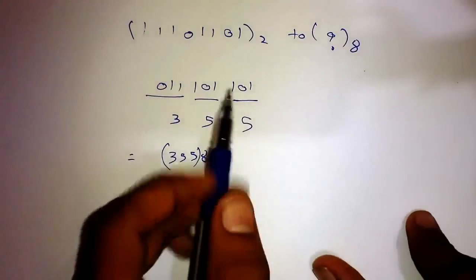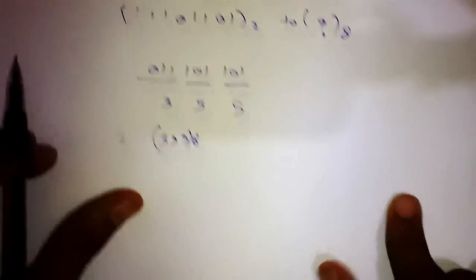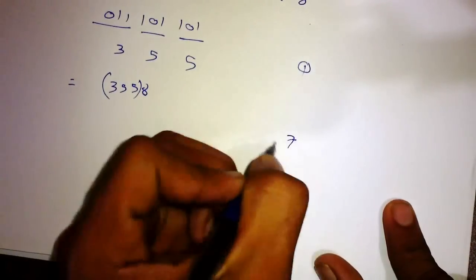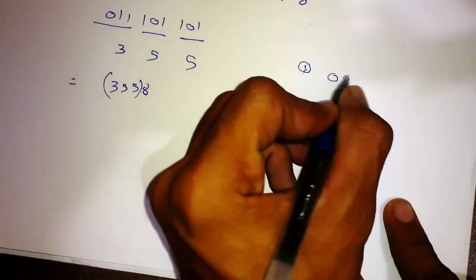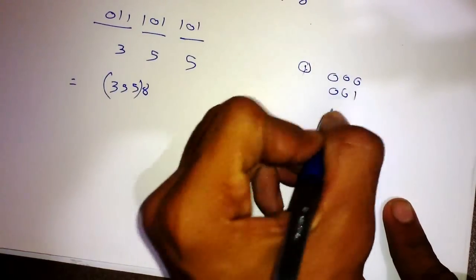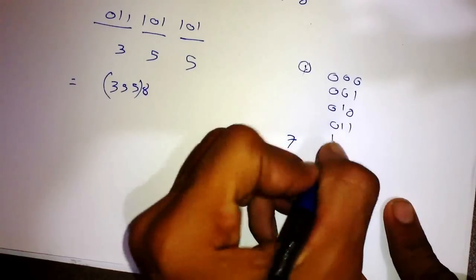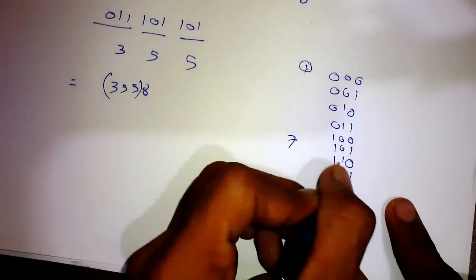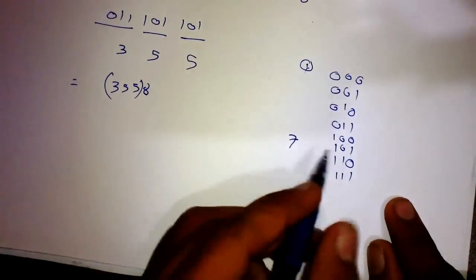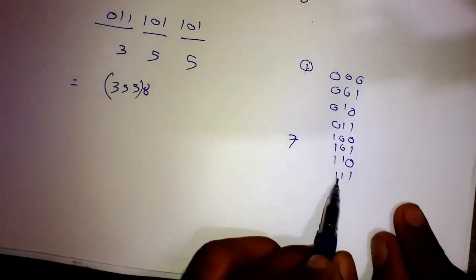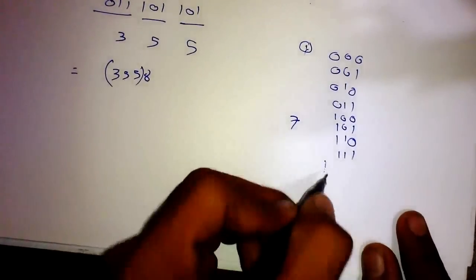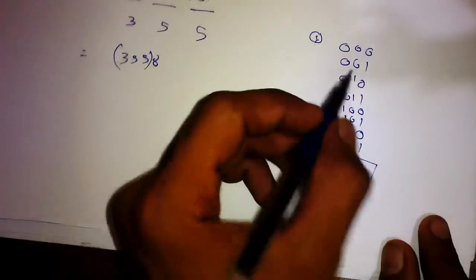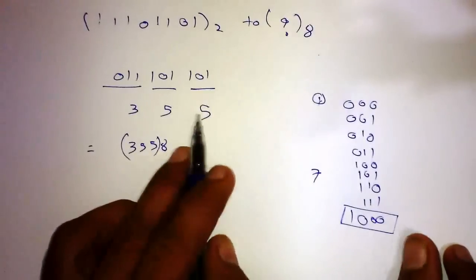Why do we make groups of 3 bits? Because octal numbers range from 0 to 7. With 3 bits you can represent values 0 through 7, and the next value, 8, requires 4 bits. So 8 does not fit in the octal range — that's why we create groups of 3 bits.